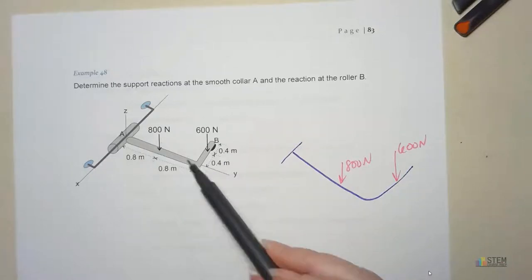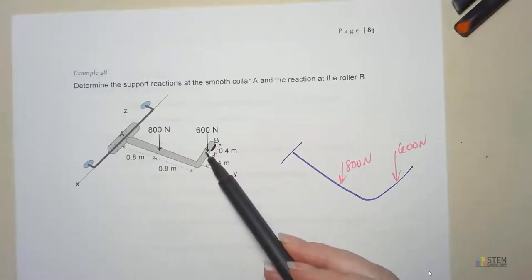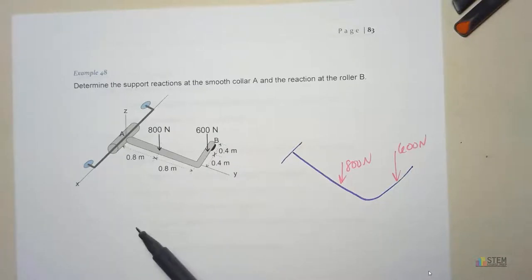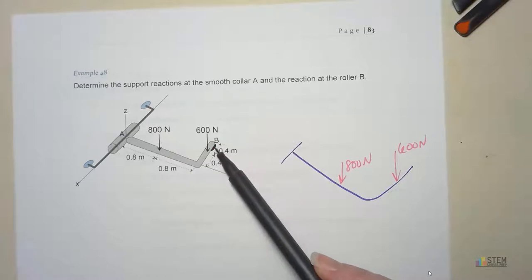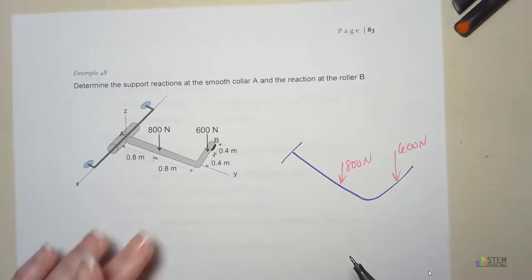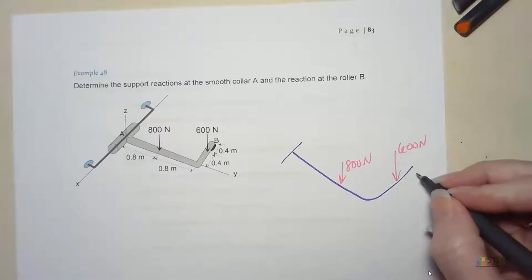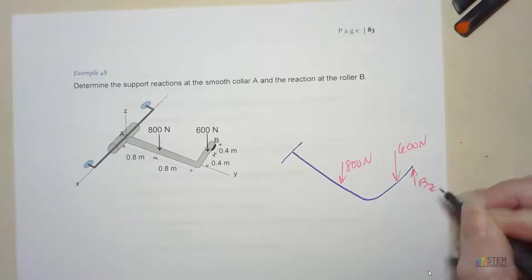Now this rod is lying in the XY plane. It might be kind of hard to see in the picture, but it's lying in the XY plane. It's supported by this roller at B. Remember, the roller just allows this thing to sit on top of it, so the roller provides a vertical force upward. Let's call that BZ.